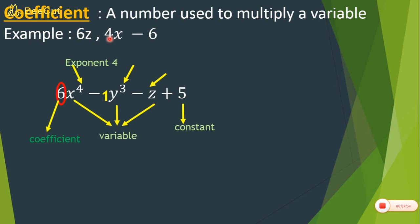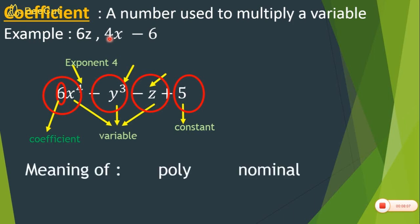Now look at how many terms this polynomial has: 6x to the power 4, y cubed, z, and 5 — so there are 4 terms. The meaning of polynomial: 'poly' means many, and 'nominal' means term. So a polynomial is made up of many terms combined together. The example above has 4 terms.